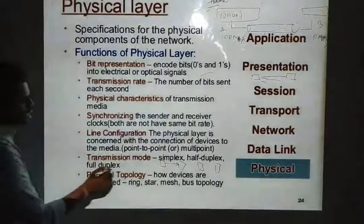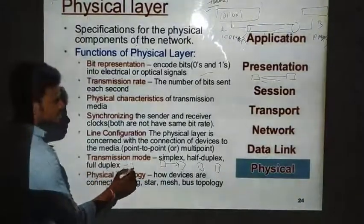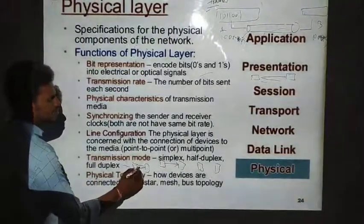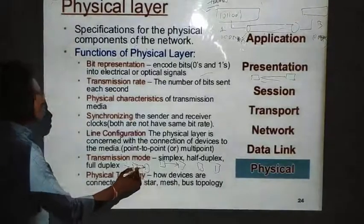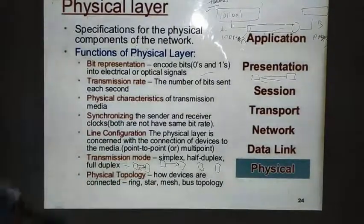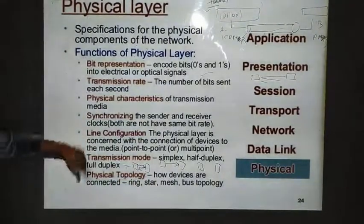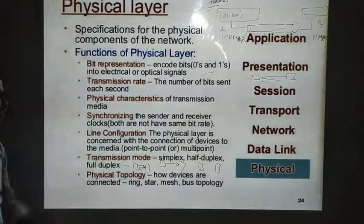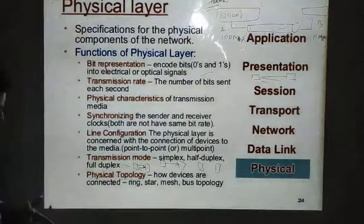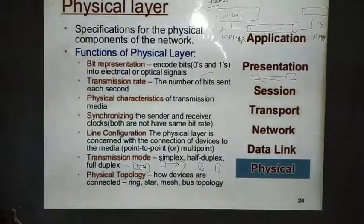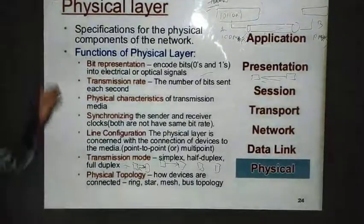Full duplex allows both sides to transmit data simultaneously — the best example is telecommunication. The physical layer determines in which mode data is transmitted.